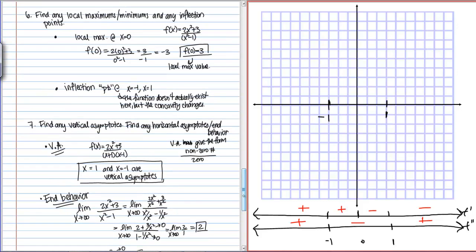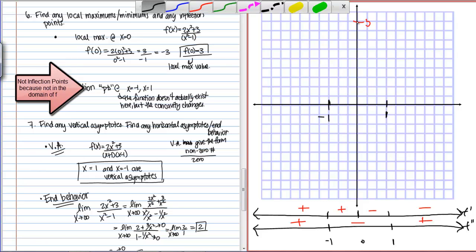We've also determined there is a local maximum value when x is 0, and at that point it's actually (0, -3). Let's go ahead and graph that. One of the big things to keep in mind when graphing based on these computations is that anything with a predetermined Y value you're going to want to write down first.